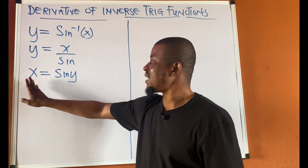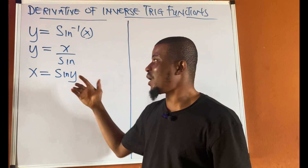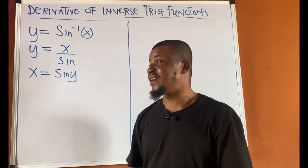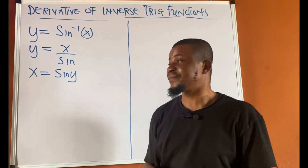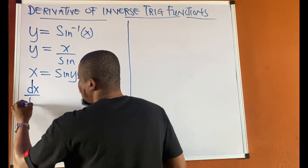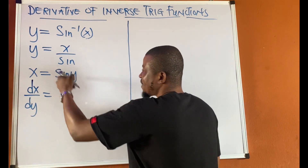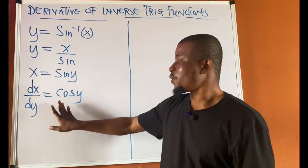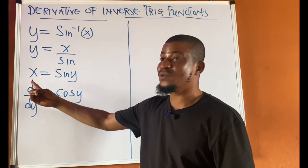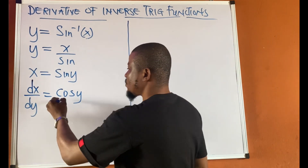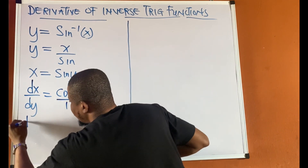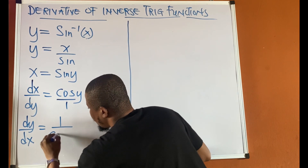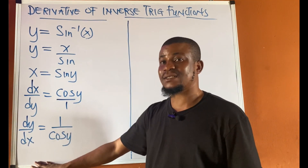With x equal to sine y, we can differentiate x with respect to y, where x is the dependent variable and y is the independent variable. Differentiating sine y gives us cos y. So dx/dy equals cos y, and we can find dy/dx by simply inverting this: dy/dx equals 1 upon cos y.